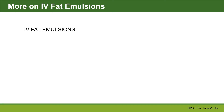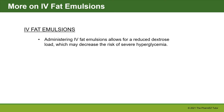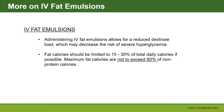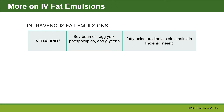Administering IV fat emulsions allows for a reduced dextrose load, which may decrease the risk of severe hyperglycemia. As a general rule, fat calories should be limited to 15–30% of total daily calories if possible. Maximum fat calories should not exceed 60% of non-protein calories. The most common IV fat emulsion is intralipid, which is made up of soybean oil, egg yolk phospholipids, and glycerin. In a patient with a severe egg allergy, we need to use caution if we administer intralipid.